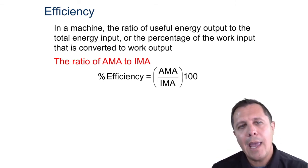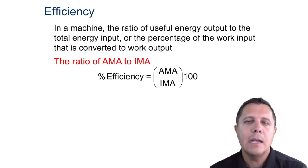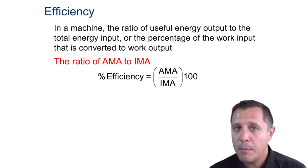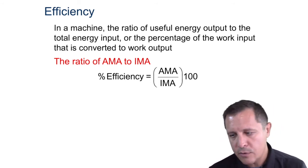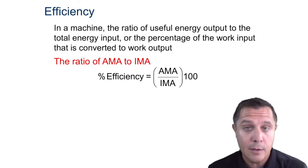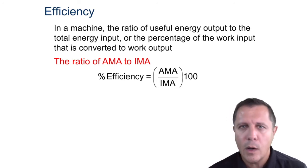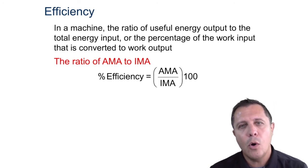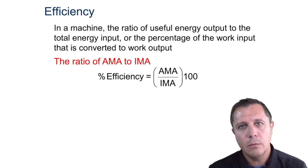Efficiency is going to be AMA divided by IMA — always. The AMA can never be greater than the IMA, so you will always divide AMA by IMA. That will give you your percentage efficiency. The slide says percentage efficiency and tells you to multiply by 100. If you divide two numbers and get, say, 0.23, understand that means it's 23%. I will always ask for efficiency in terms of percentage, so multiply by 100 to get the percentage value.